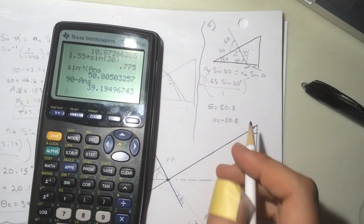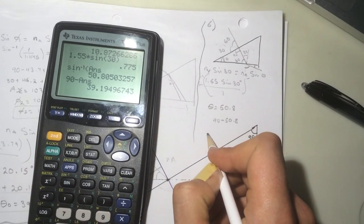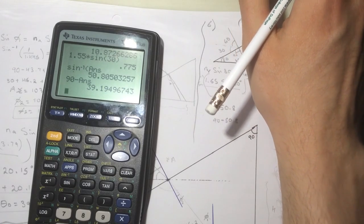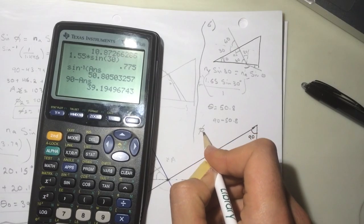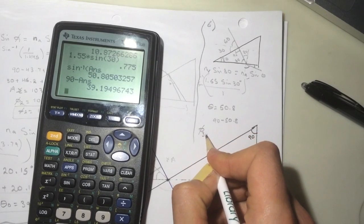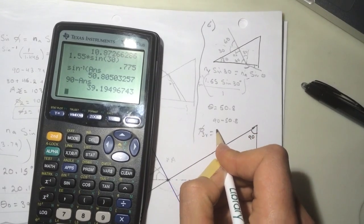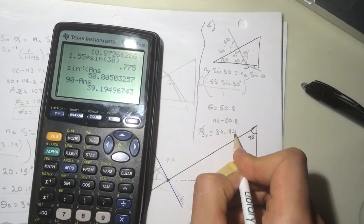So 90 minus your answer, and you'll get 40. What do they call it? For the theta 3, theta 3 violet will be equal to 39.194.